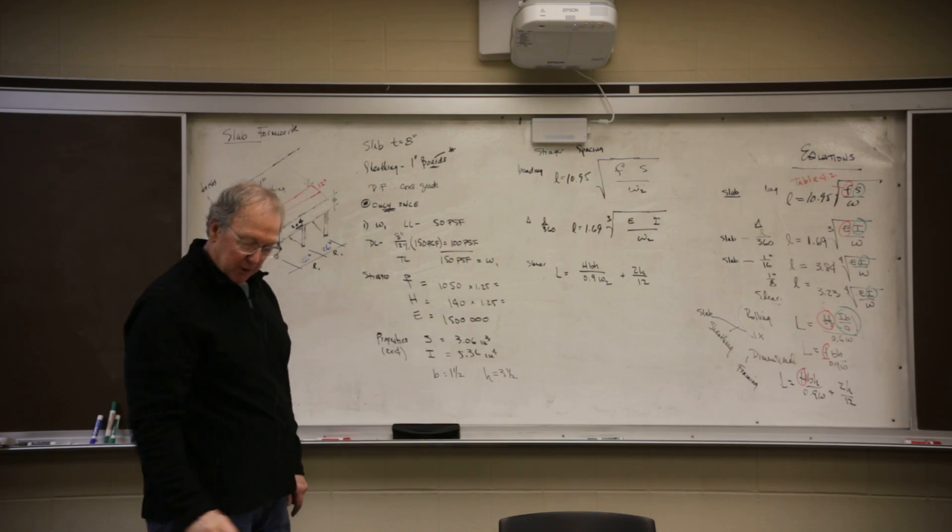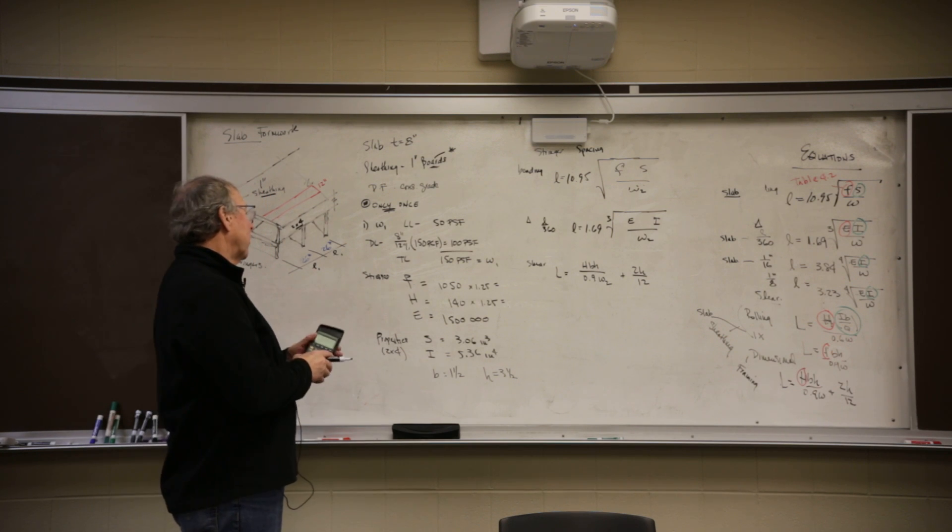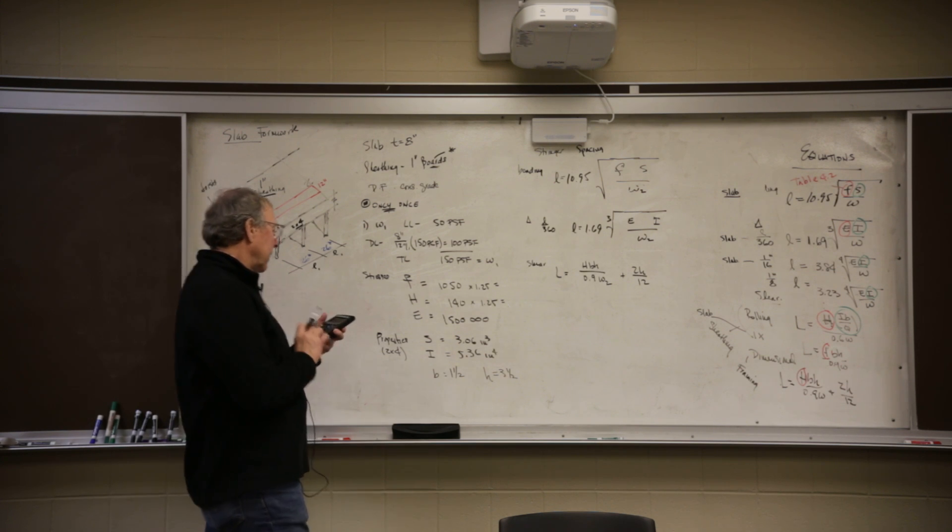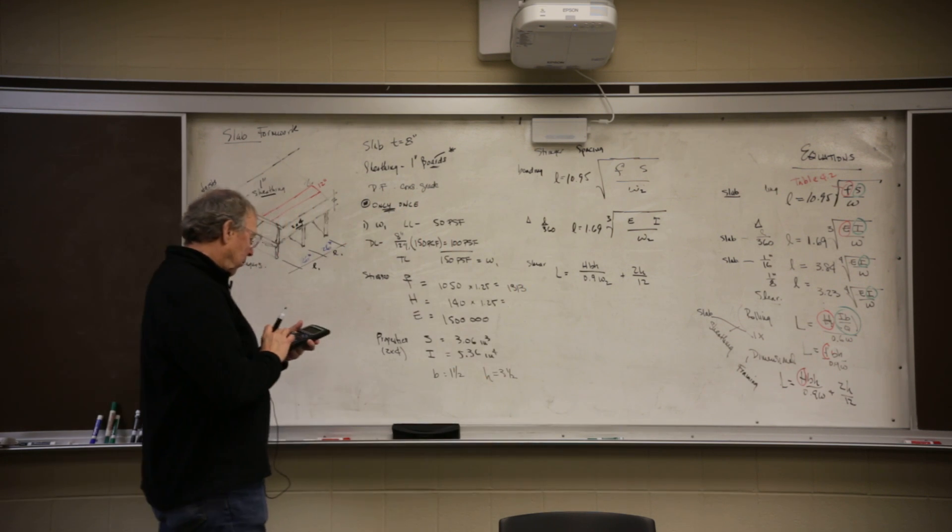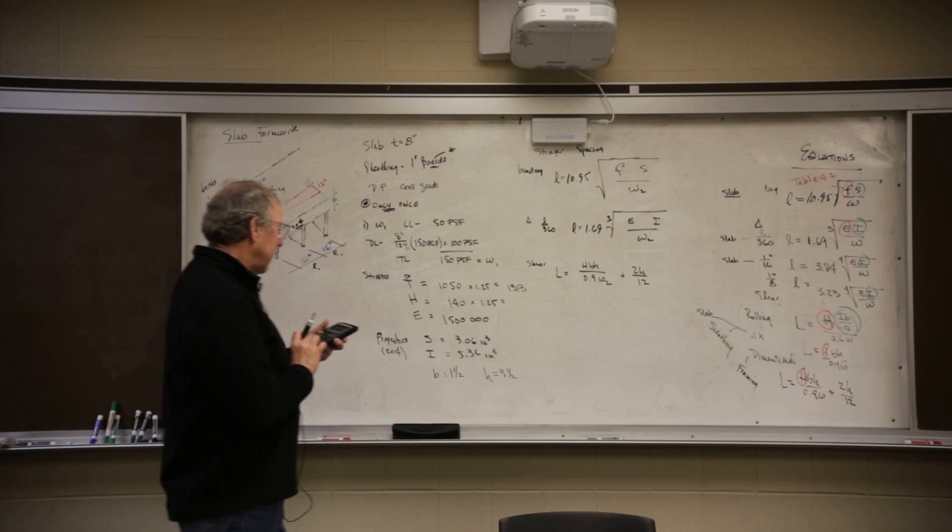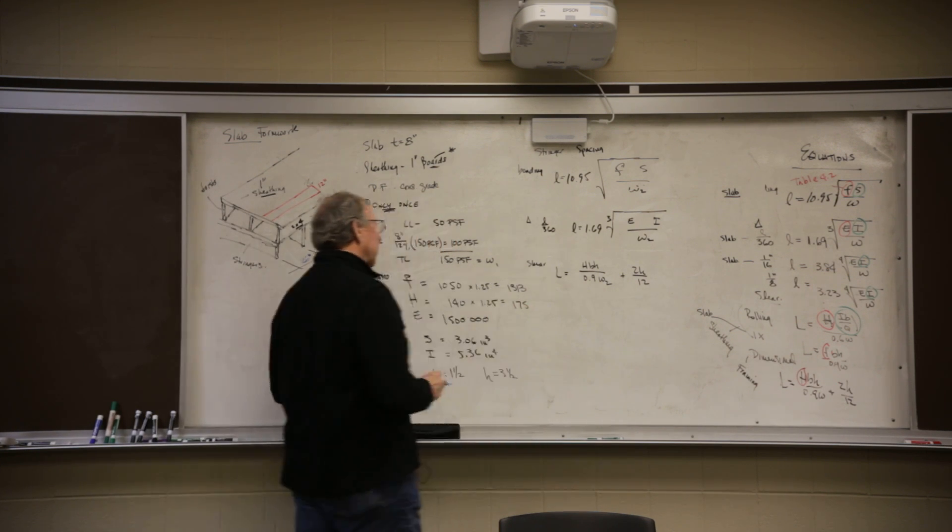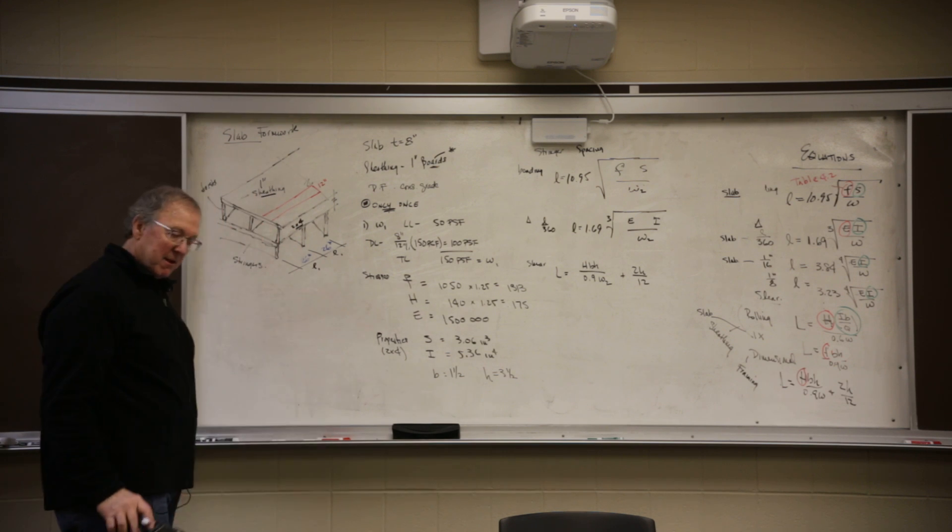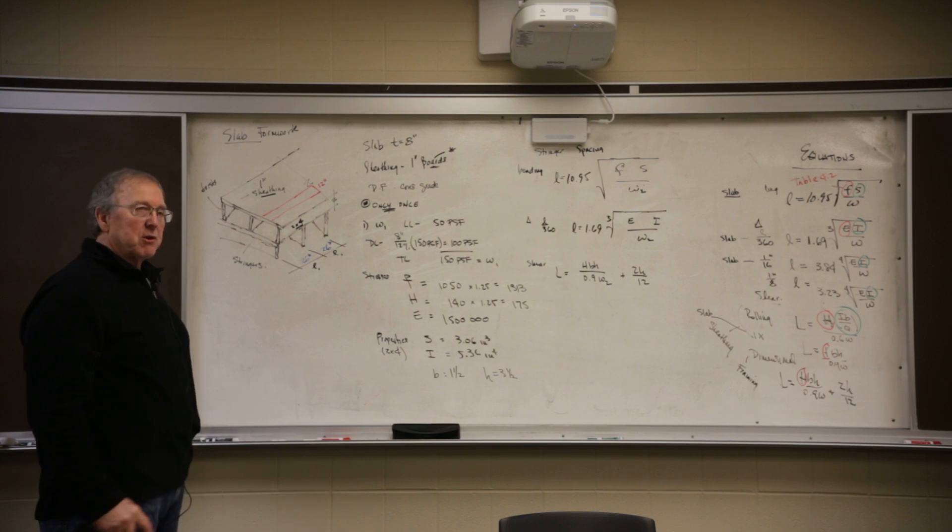And it says do nothing with that. So if I take and multiply those out, I get 150 times 1.25, 1,050 times 1.25, I get 1312.5 and your book uses 1313. Got 140 times 1.25 is 175. So there's my values for that. Transfer them over and we got it.